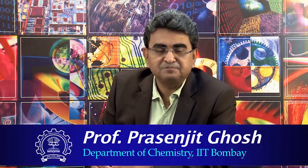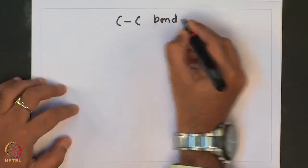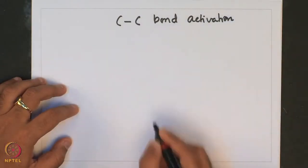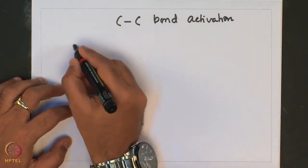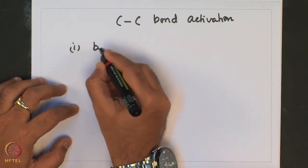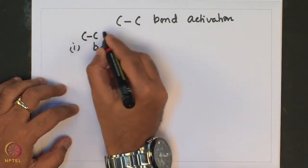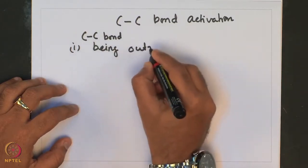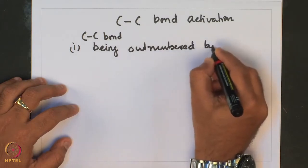Welcome to this lecture on transition metal organometallic chemistry from principles to applications. In the last lecture we talked about a very interesting kind of activation reaction, particularly the C-C bond activation reaction, which is very challenging in the sense that it is much more difficult than C-H activation reaction or H-H activation reactions. C-C bond activation is challenging because of being outnumbered by C-H bonds.